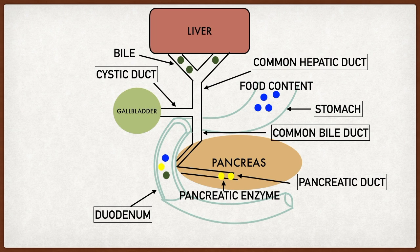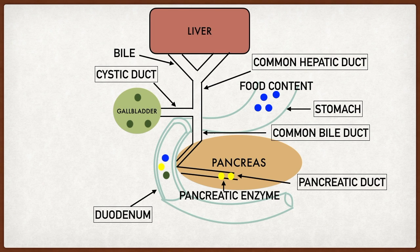Now the question is, what do we do with excess bile? That's where the gallbladder comes in. The goal of the gallbladder is to store excess bile. That bile travels through the common hepatic duct, then turns into the cystic duct and gets stored in the gallbladder. The next time we eat a meal and need more bile, the gallbladder contracts and releases that bile through the cystic duct into the common bile duct to enter the duodenum.